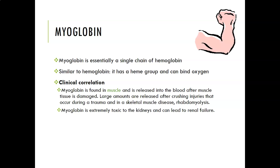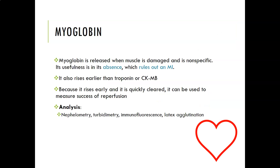Something causing the destruction of skeletal muscle will cause a lot of myoglobin to be released in the blood. This is a concern because myoglobin is extremely toxic to the kidneys and can lead to renal failure. Renal failure can be a complication of rhabdomyolysis if the damage is extensive. Myoglobin is released when muscle is damaged, but it is non-specific — it will not tell you what muscle it came from.